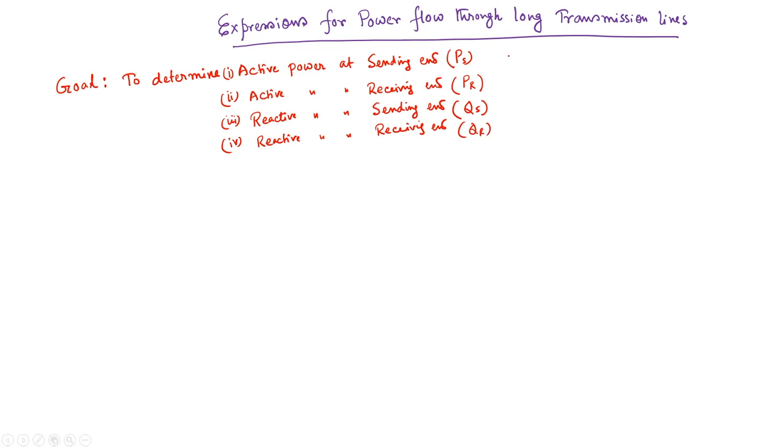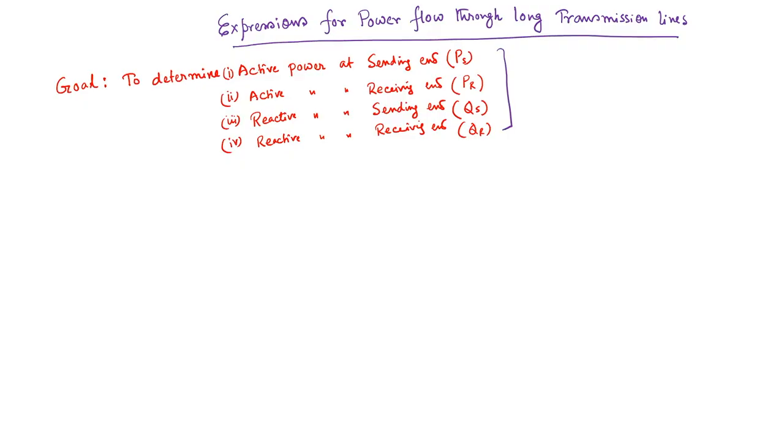We will determine the mathematical expressions for sending-end active power, receiving-end active power, sending-end reactive power, and receiving-end reactive power. These will be derived from the voltage-current relationship already derived in the last lecture — in particular, the sending-end and receiving-end voltage relationship.